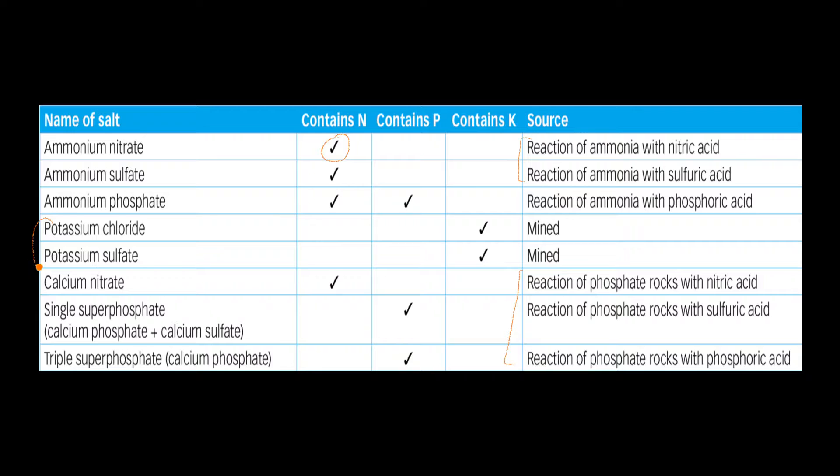Now these are the ones you won't be having a look at how we produce because, well, they're actually mined. You get them out of the ground. So potassium chloride and potassium sulfate. You mine those out of the ground. That's absolutely fine. They contain potassium, which plants need, which is great. But we don't need to actually produce them via reaction with ammonia or phosphate rock.